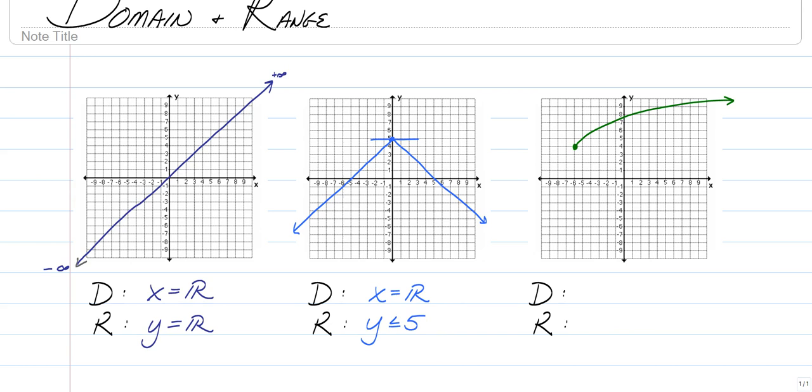So again, range is up and down. It never gets above five, but it goes down forever and ever and ever. So that's why we say y is less than or equal to five because that would cover negative 10, negative 1,000. It's going to keep on going down forever and ever and ever.